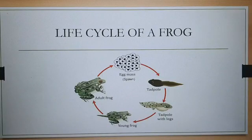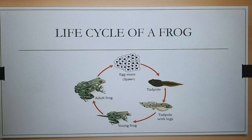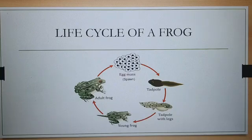Here we are going to discuss the life cycle of a frog. A female frog lays hundreds of eggs at a time, generally in a pond. These eggs float on water and have a jelly-like coating which protects them.